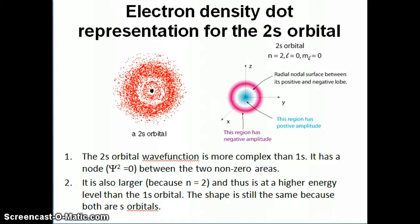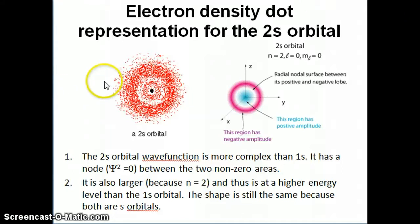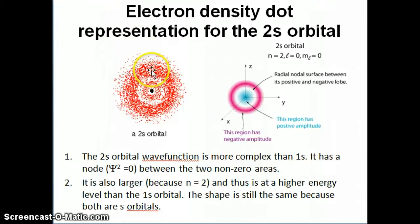Hi, everyone. I'm going to continue talking about how we actually represent the wave function — specifically how to represent the square of the wave function, psi squared, which corresponds to the probability of finding the electron at a given location or position around the nucleus. Psi squared represents the probability, so we have to visualize or represent this probability.